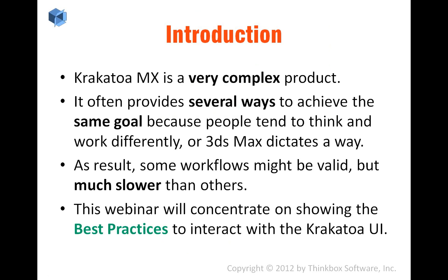As you probably know, Krakatoa is a very complex product and as a side effect, the user interface is also kind of complex. Krakatoa often provides multiple ways to achieve the same goal, mostly because we feel that people tend to think differently and we don't want to provide a single way to achieve a result. We also want to support other 3ds Max typical workflows without forcing you to use a Krakatoa-specific way. But the 3ds Max ways are often slower than what could be achieved with some smart scripting, so in many cases we have a feature done the Max way and the feature done the Krakatoa way — basically different points of access to the same thing. In many cases you might think that you're using Krakatoa correctly and in reality you might be choosing the slowest path.